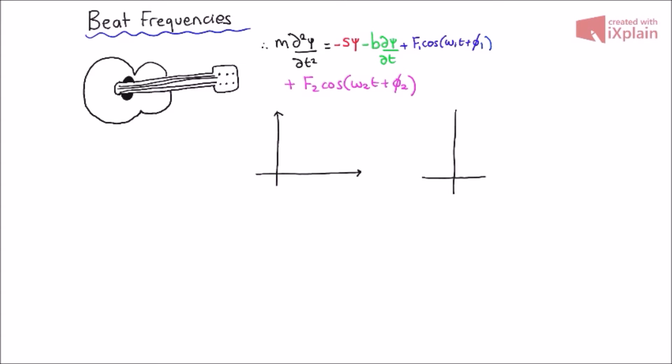So when a person hears a beat frequency, it sounds like a periodic variation in the volume. Guitar players use this to their advantage by listening to beat frequencies to tune guitar strings to their correct frequencies. When the variations in volume become less frequent, the two tones are now more in tune with each other.